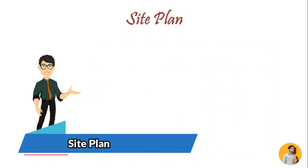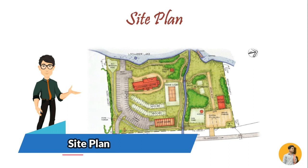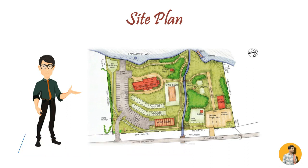Site plan is an architectural plan, landscape architecture document, and detailed engineering drawing. A site plan usually shows a building footprint, walkways, parking, drainage facilities, sanitary sewer lines, water lines, lighting, landscaping, and garden elements.